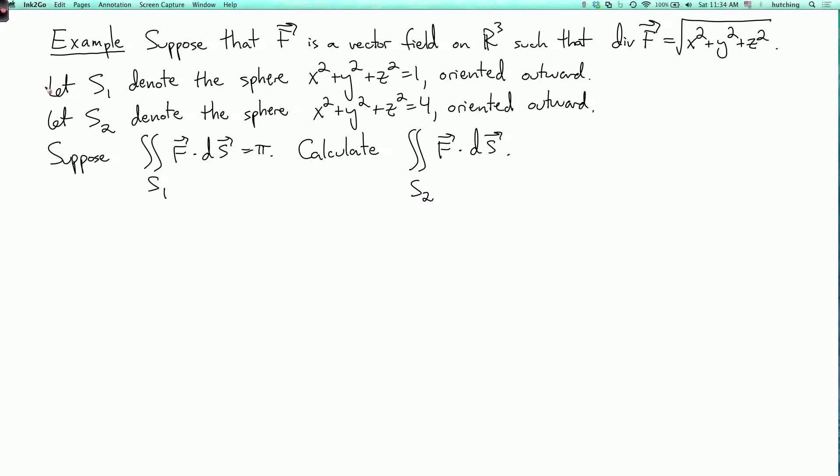We let S1 denote the unit sphere, oriented outward. We let S2 denote the sphere of radius 2, oriented outward. We're given that the integral over S1 of F dot dS equals pi, and our problem is to calculate the integral over S2 of F dot dS.